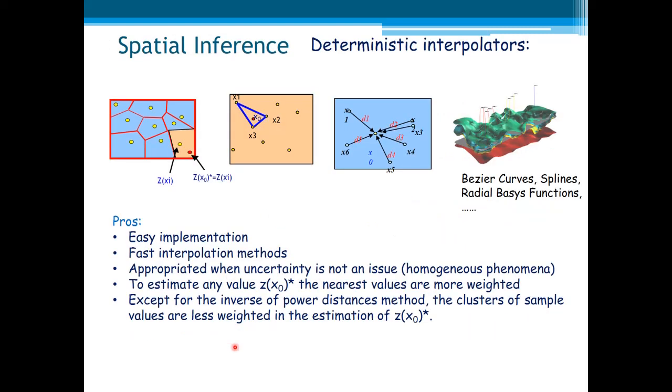Because they are at the same distance, about the same distance. And that's why we say that it is not a declustering method. And this is important because you are dealing with spatially correlated variables, as you could see in the previous section, the variogram calculations and so on. So, in short, let's see the deterministic models. The advantage of those deterministic models that you have seen is the easy implementation, fast interpolation methods appropriated when uncertainty is not an issue, which means homogeneous phenomena. To estimate any value, z(x0), the nearest values are more weighted. Except for the inverse of power distance method, the clusters of sample values are less weighted in the estimation of z(x0).